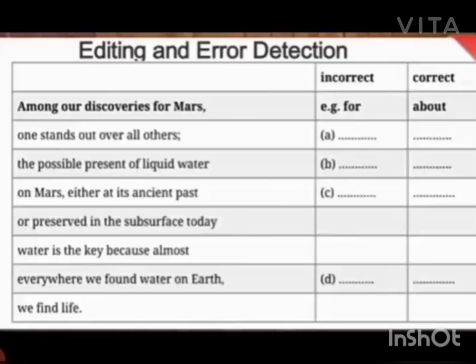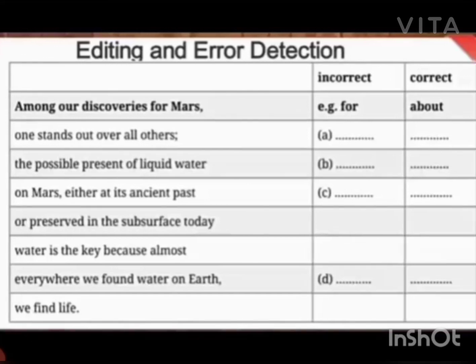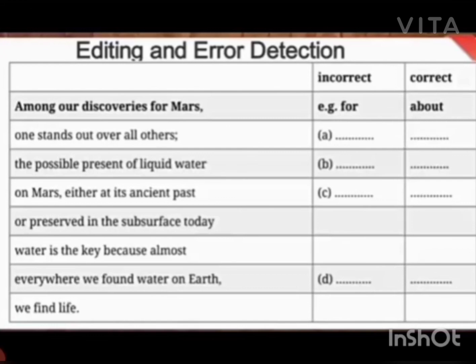Now coming to the last passage: among our discoveries for — among our discoveries for, what, when we talk about Mars — that is how we have the mistakes, especially the prepositions. One stands out over all others. So it is a clause — all others — because a semicolon is used. So we will understand that it is dependent. The possible present of liquid water — see, when there is a mistake or not: 'the possible present of liquid water' — we will never say 'the possible present.' We will say 'the possible presence of liquid water.'